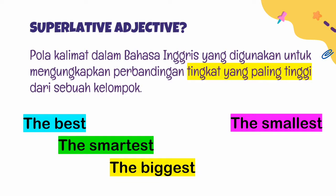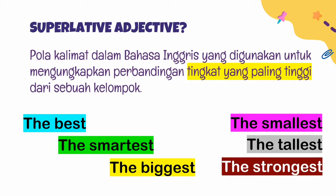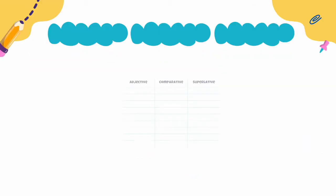The smallest — paling kecil, the tallest — paling tinggi, the strongest — paling kuat. Jadi biasanya superlative adjective itu kita tambahkan -est di belakang kata sifat. Misalnya smart menjadi smartest, small menjadi smallest.